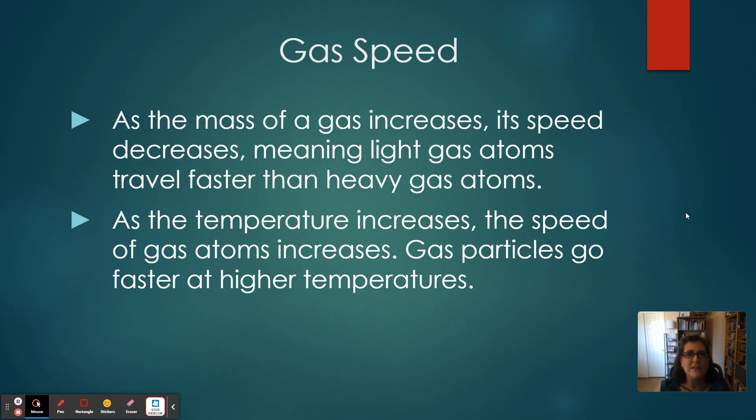Last slide: a little bit about gas speed. As the mass of a gas increases, its speed will decrease. This means really small, light gas atoms are going to move around faster than larger, heavier gas atoms. So if you think of hydrogen, H2—two little tiny hydrogen atoms bonded together—it's a really light molecule, so it's going to move around really fast compared to something like chlorine. Those atoms are bigger, so you have two chlorine atoms bonded together. It's a bigger particle molecule, so it's going to move around slower than that little hydrogen. So the lighter they are, the faster they're going to go.